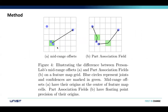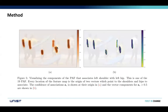Here is the comparison between mid-range offset and Part Association Field introduced in this paper. In this image, the blue circles represent joints and confidence is marked in green. As you can see, PAF associates those four joints much better than the mid-range offset. Here is also a visualization of the PAF associating the left shoulder with the left hip. When PAF gives us all these outputs, we can apply a confidence threshold to get the best result.